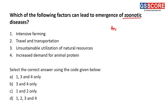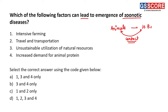So from animals, these diseases are passed on to human beings. Often there will be an intermediate species for the passage of zoonotic diseases. The question is asking us which factors lead to the emergence of zoonotic diseases. All those factors where there is increased contact between human beings and animals lead to the spread or emergence of zoonotic diseases.